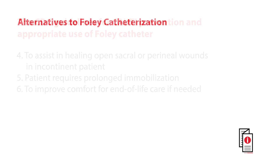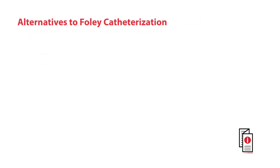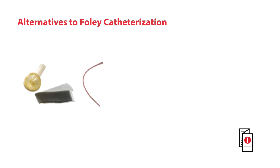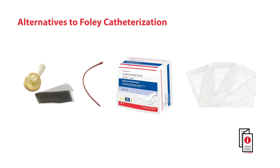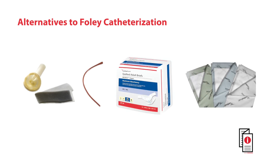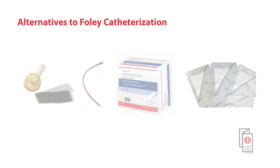If appropriate indications for Foley insertion are not met, consider using alternatives to an indwelling urethral catheter. Alternatives can include male external catheters, intermittent catheterization, incontinent briefs, and/or absorbent under pads.